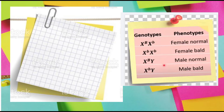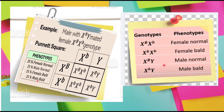Using a Punnett square, a bald male mated to a normal female gives the following zygotes: 25% female normal, 25% male normal, 25% female bald, and 25% male bald.